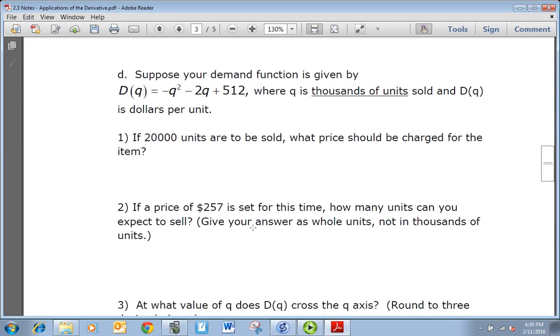Suppose your demand function is given by D(q) = -q² - 2q + 512, where q is in thousands of units sold and D(q) is in dollars per unit. If 20,000 units are to be sold, what price should be charged for the item? Okay, so it's in thousands of units, so our value is really just 20 because 20 times a thousand is 20,000. So we're just trying to find what we get when we plug 20 in, so basically D(20). So it's going to be -20² - 2 times 20 + 512, and when you do that you get 72. So $72 should be charged.